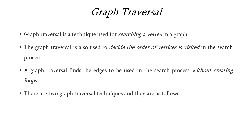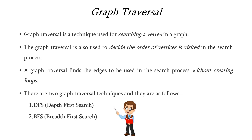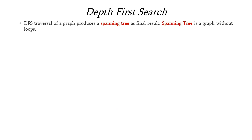There are two kinds of graph traversal techniques: depth first search and breadth first search, in short DFS and BFS. In this lecture we are concentrating on DFS concept. DFS traversal of a graph will produce a spanning tree as the final result.